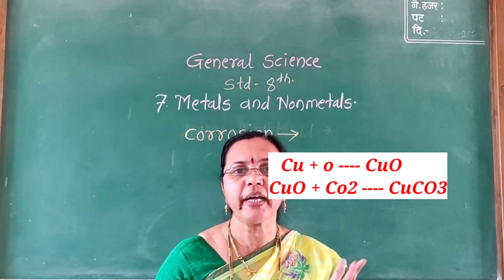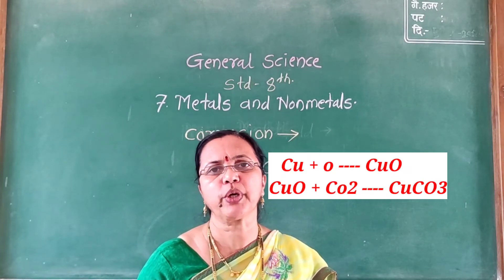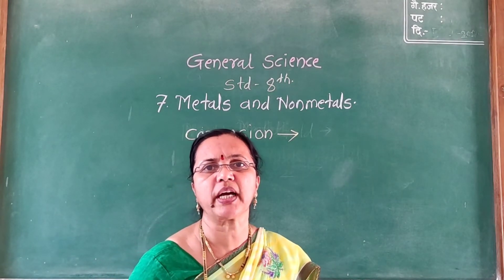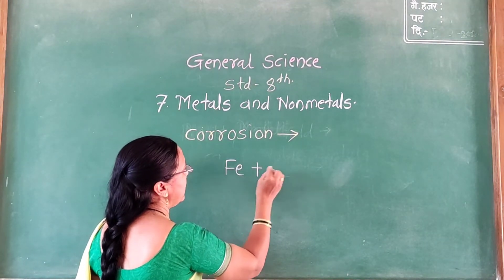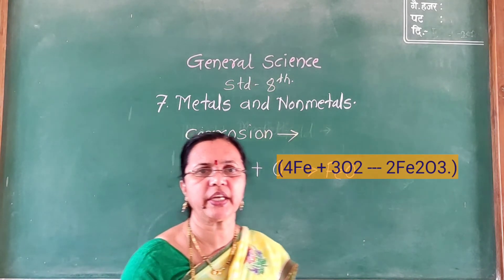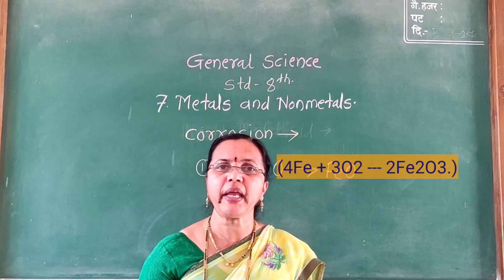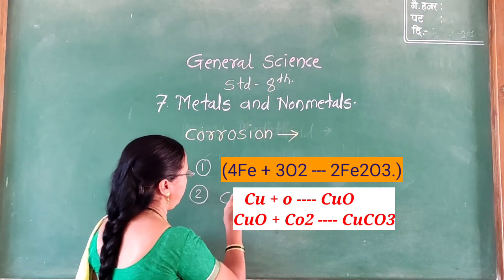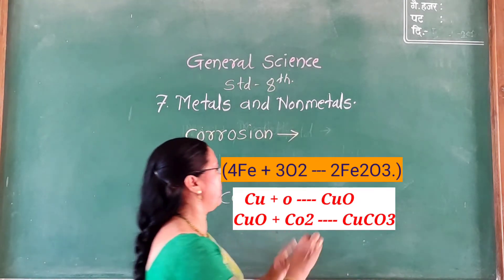First example: a reddish colour deposit is formed on iron by reaction with oxygen gas, forming ferrous oxide. Second example: a greenish colour deposit is formed on copper by reaction with carbon dioxide gas, forming copper carbonate on the surface of copper.